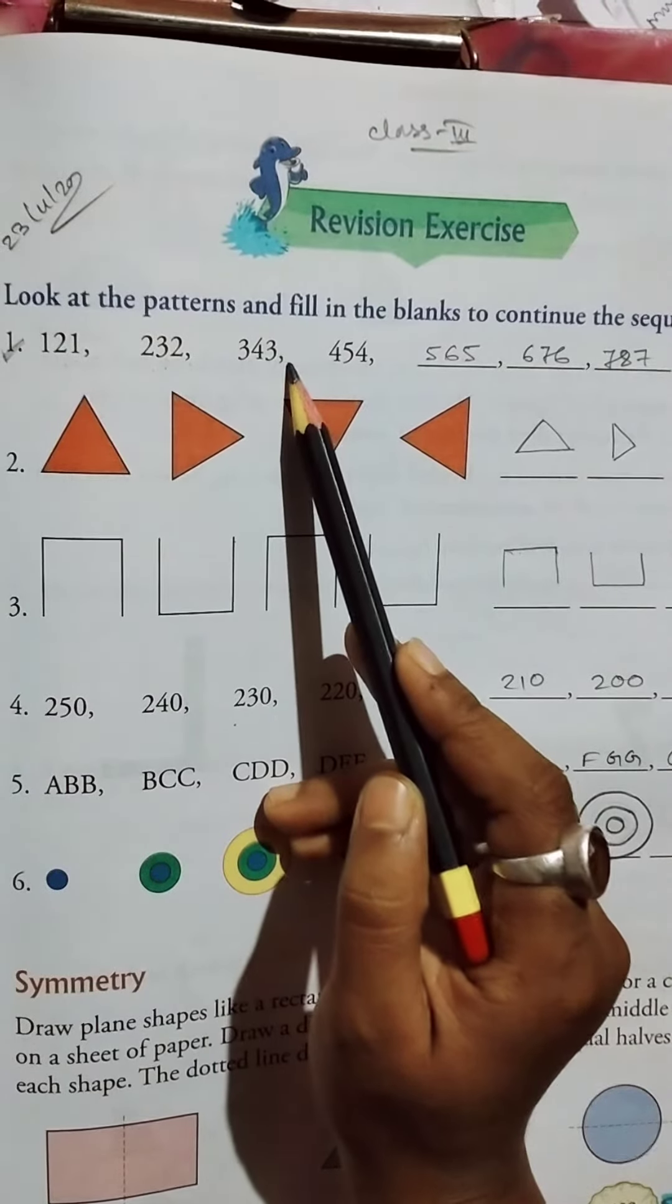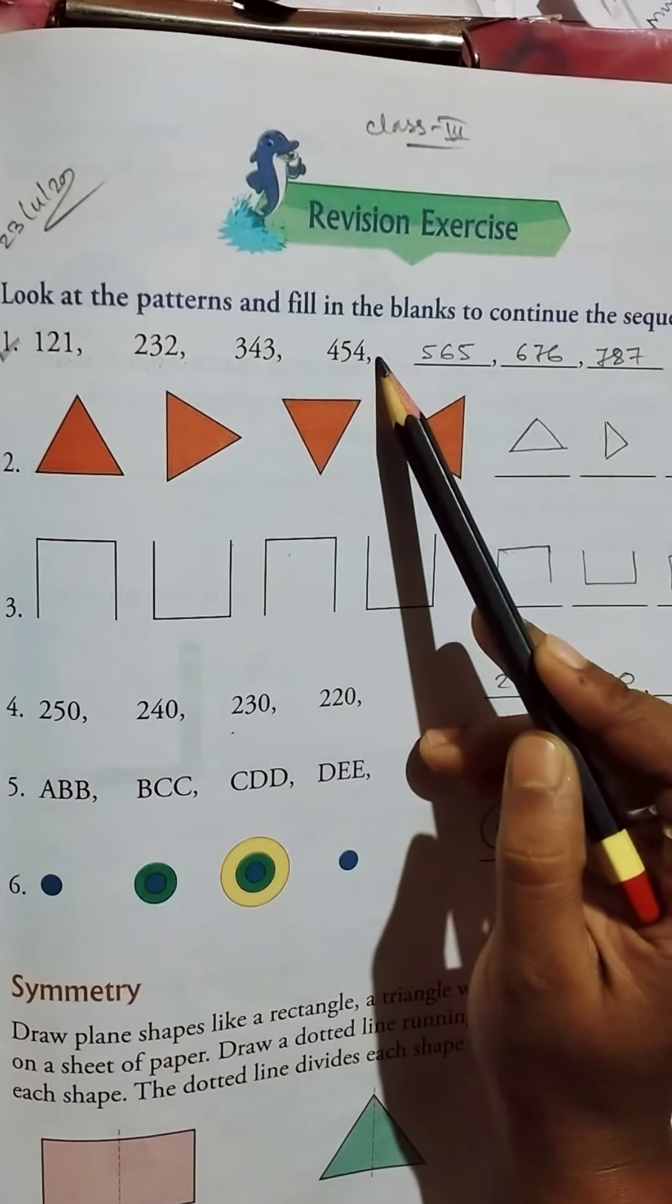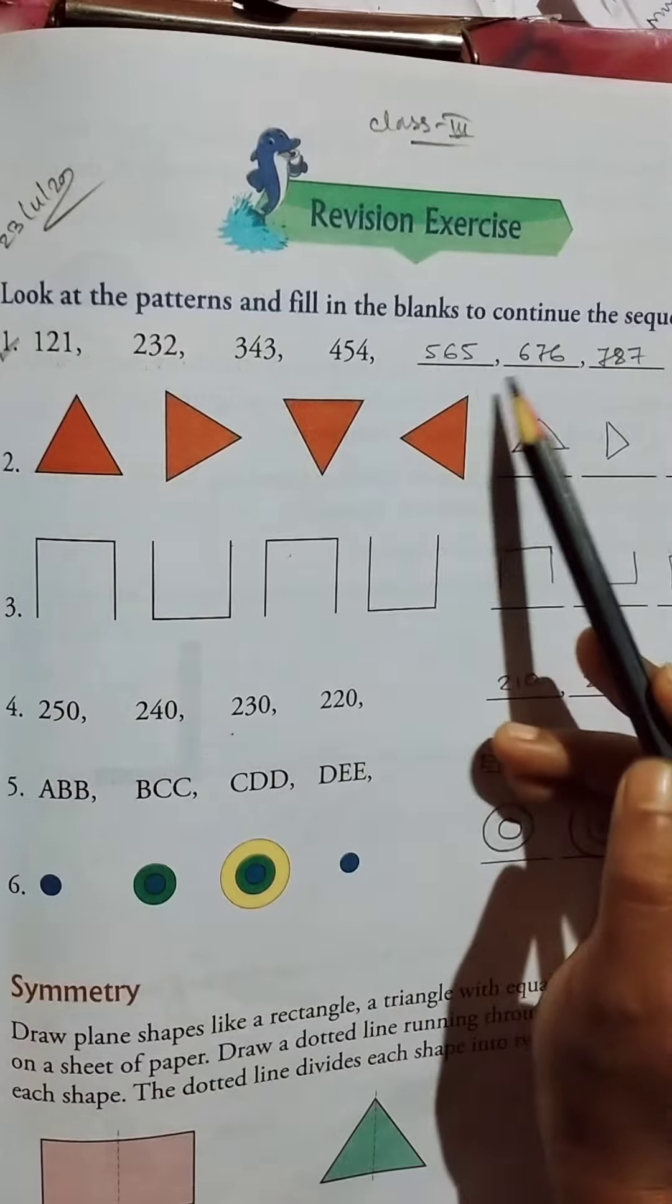So how do we continue? 454 plus 11 equals 565, then plus 11 equals 676, plus 11 equals 787.